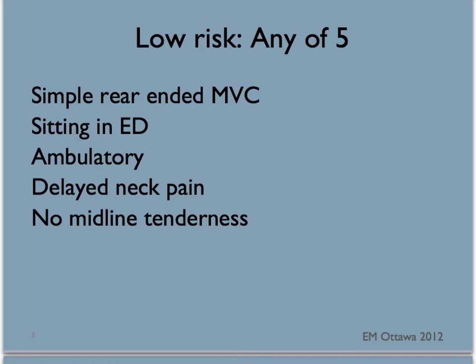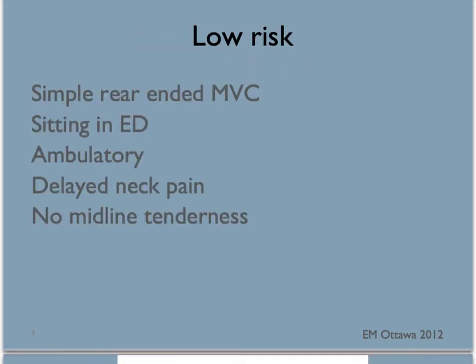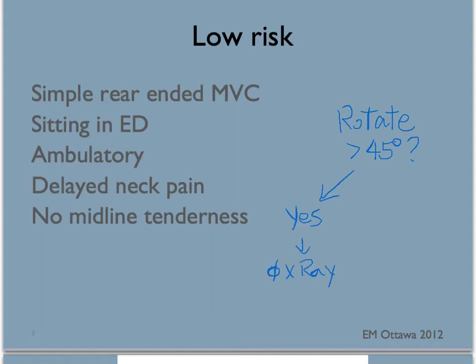Note that the patient only needs any one of these characteristics to count as low risk. If the patient has any of these low risk factors, you will ask them to rotate their neck actively. If they can move their neck more than 45 degrees on both sides, no x-ray is needed and their C-spine is cleared clinically. If they cannot move their neck 45 degrees on both sides, the patient will need an x-ray of their C-spine.